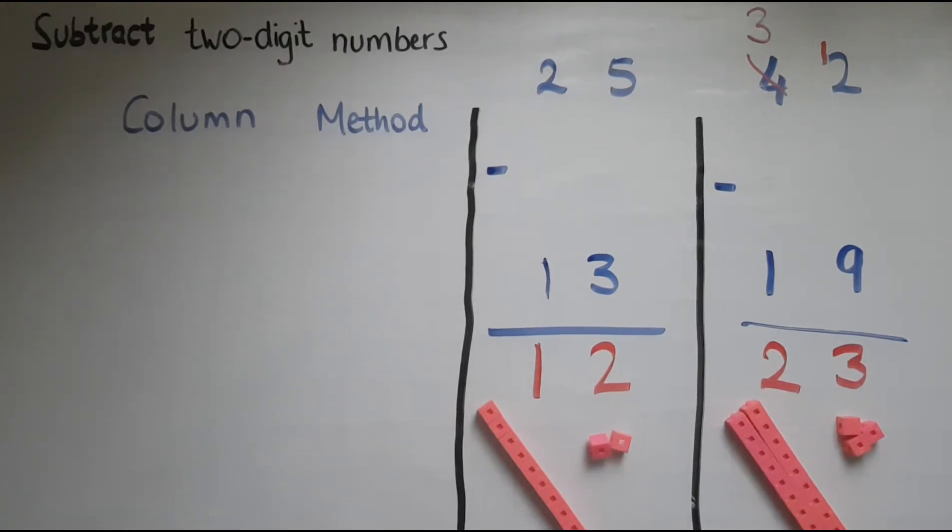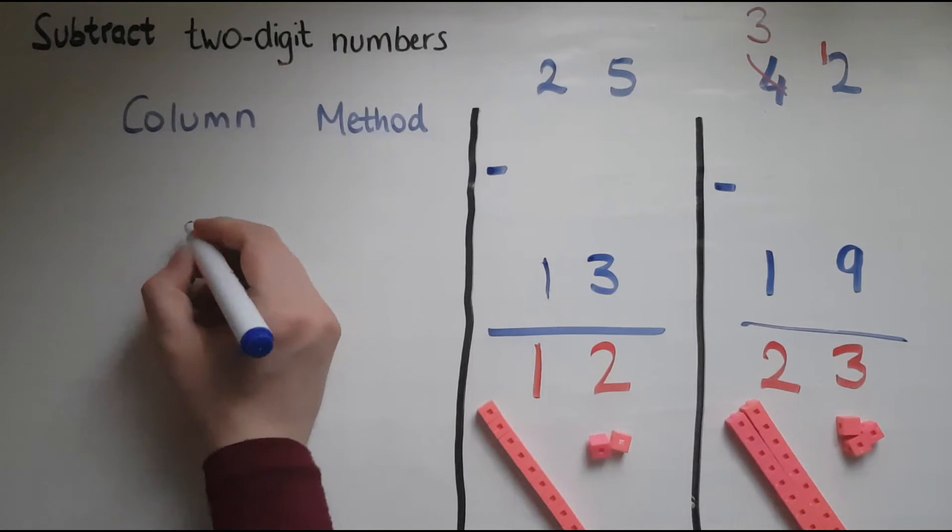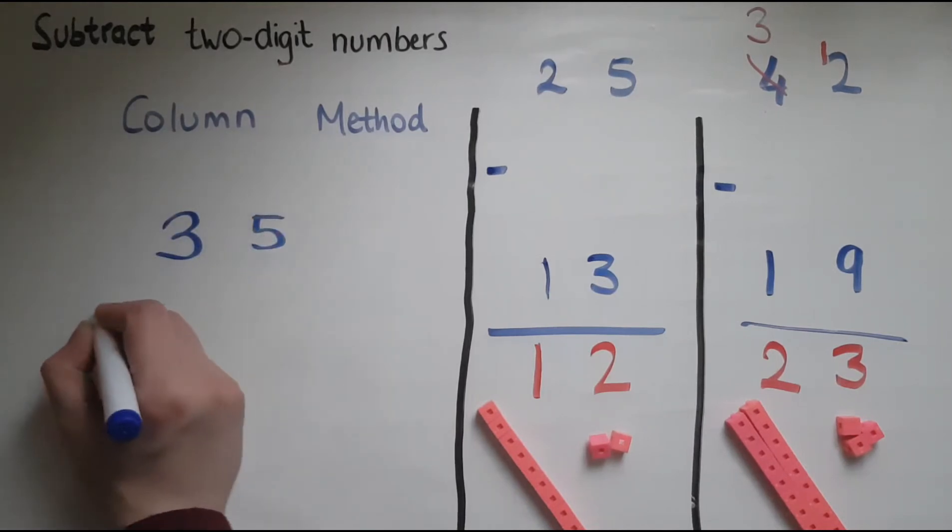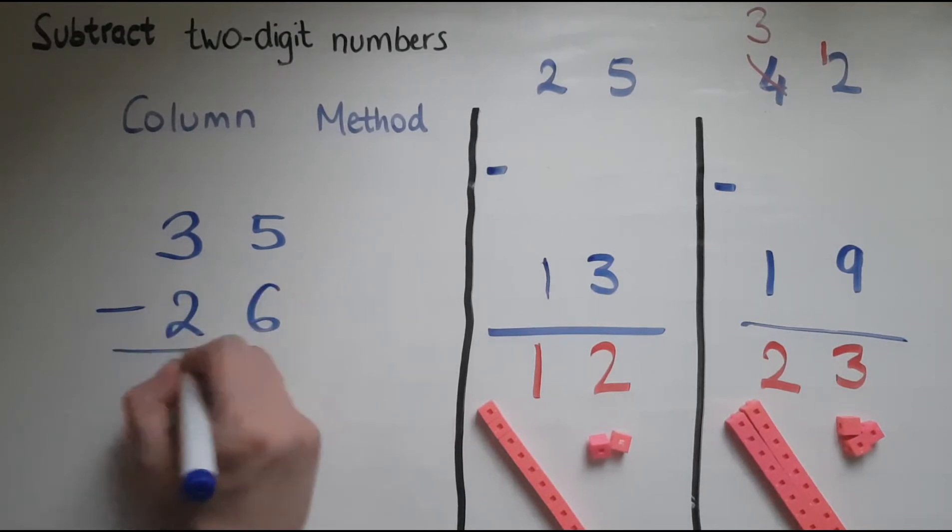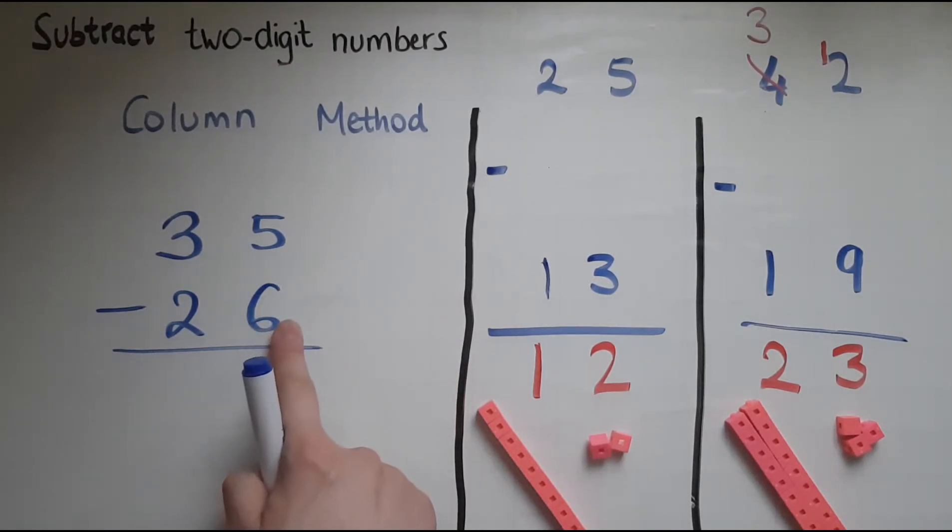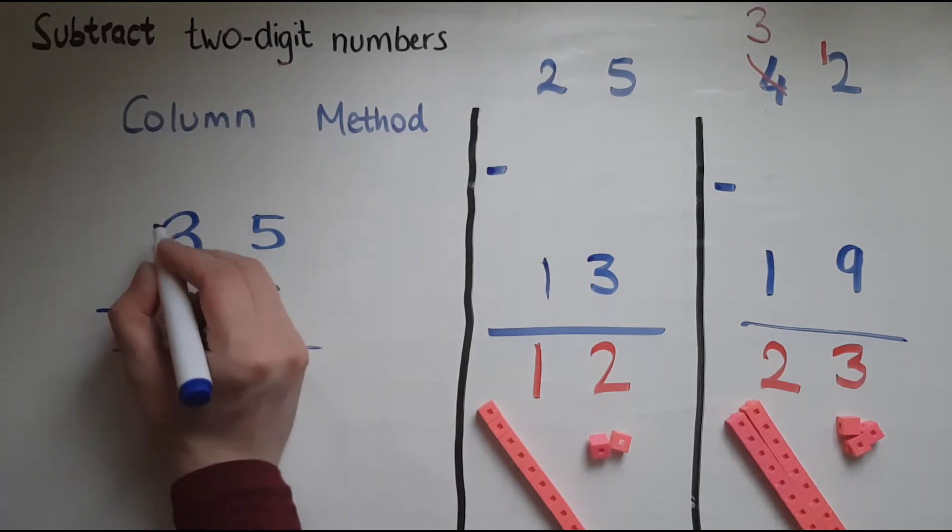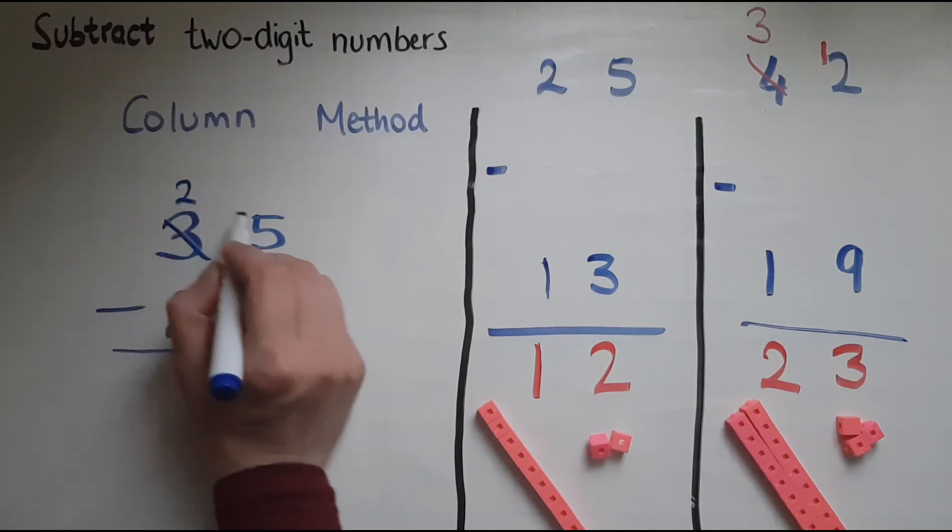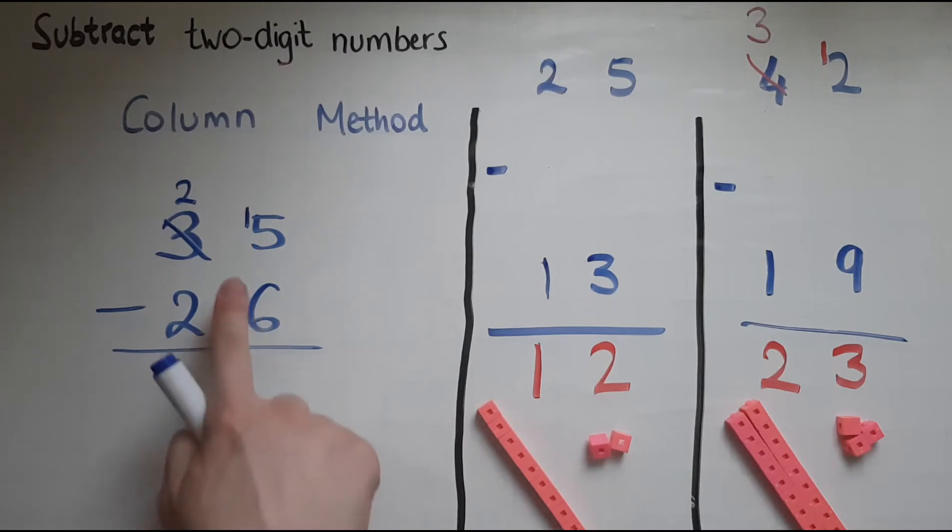I'll look at two more examples to illustrate. So we have 35 take away 26. So we've got six to be taken away from five but that is not possible because six is bigger than five. So I'm going to have to borrow one lot from three. So three becomes a two and five becomes 15. 15 take away six gives me nine and two take away two leaves me with zero and I don't need to write that number in front. So my answer would be nine.